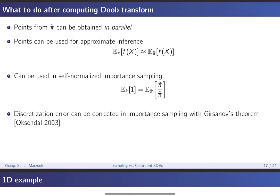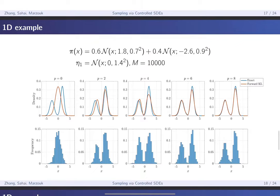We'll run through some simple numerical examples. The first is a 1D bimodal distribution — two Gaussians. We chose the reference distribution to be a standard Gaussian and used 10,000 points. As you increase the order of the polynomial, from zeroth order up, you can see that the approximate distribution in red approaches the exact target more and more. Even if you're not exact, the samples produced by these approximations are still pretty good, at least by the eyeball norm.